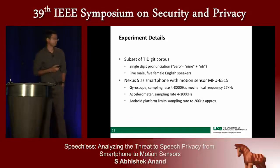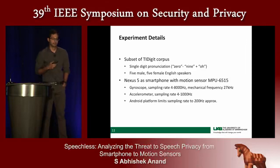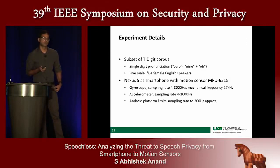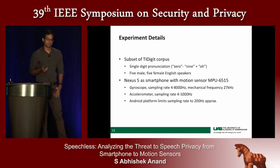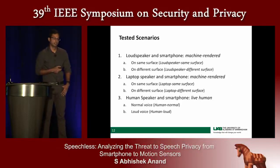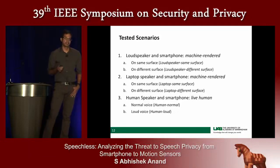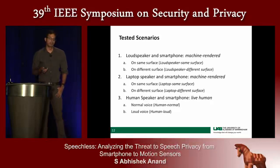We use a subset of the TI-digit corpus, which contains single-word pronunciations. The Android platform limits the sampling rate of motion sensors on smartphones to 200 Hz. Even though the gyroscope and accelerometer are capable of outputting much higher sampling rates, they are limited by the operating system. We tested scenarios categorized as machine rendered speech, subcategorized as placed on the same surface or on a different surface, as well as a human speaker speaking in normal voice and a human speaker speaking in a loud voice into their smartphone microphone.